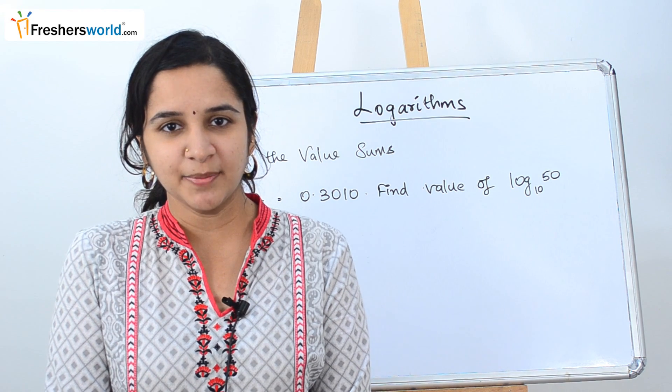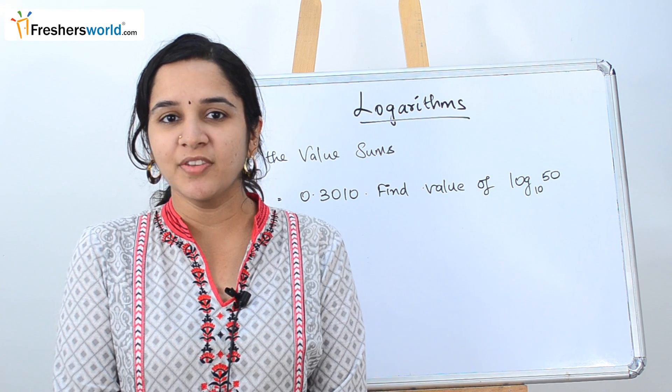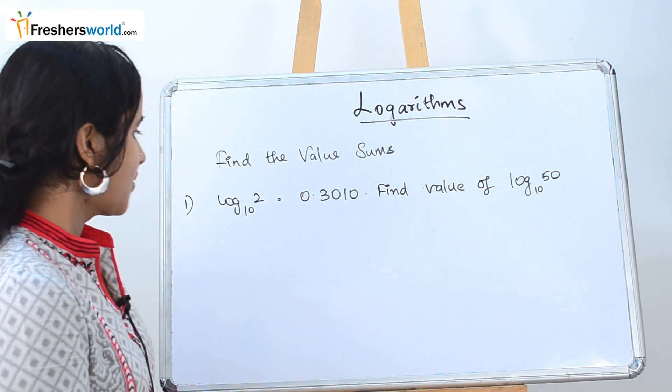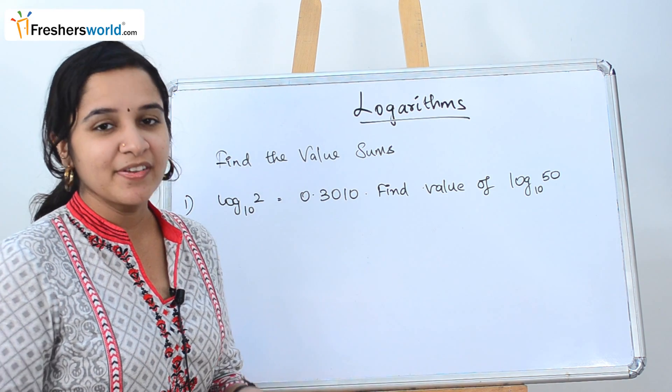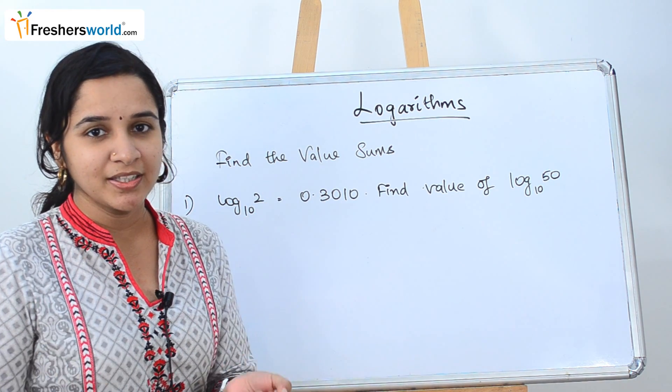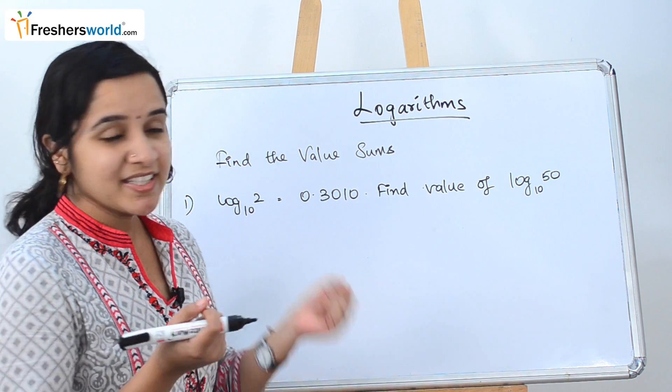In the previous videos we dealt with different types of problems in logarithms. The topic we are going to look at today in logarithms is find the value of sums. Generally in these types of sums they will give you the value of log 2 or log 3, and then in the question we have to incorporate that in order to find the answer. So let's get started.